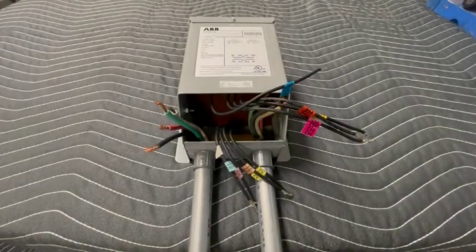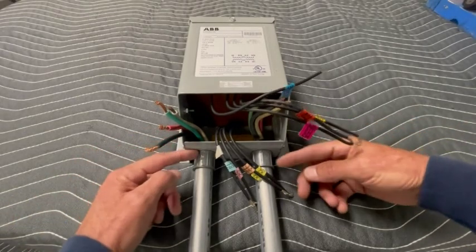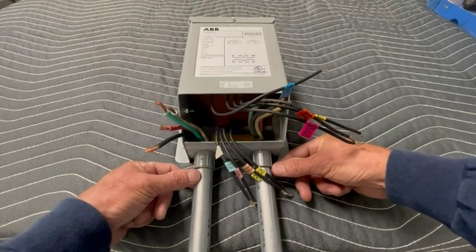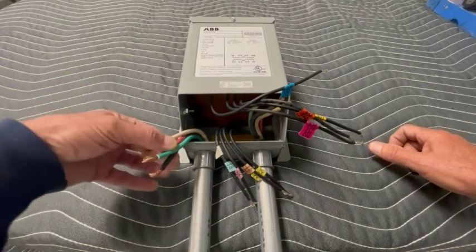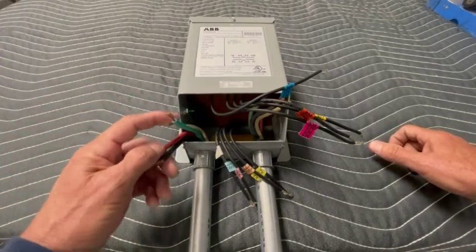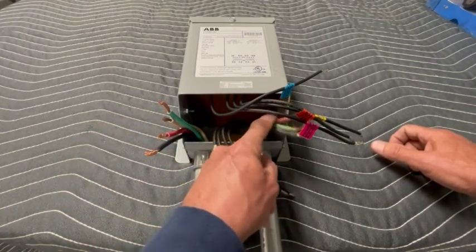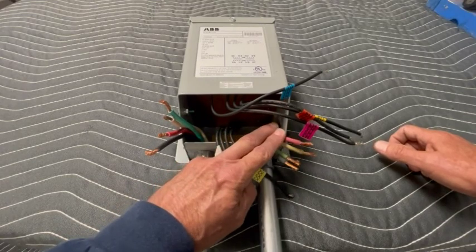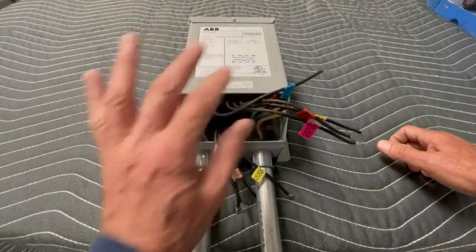The buck boost transformer comes with four knockouts. You got two on the sides here and you got two on the bottom for your conduit. So as you can see we already ran our conduits here. We have our incoming source power wires. We got L1, L2 neutral and ground. And then over here we have our wires that are going to the panel itself. Once again L1, L2 neutral and ground. And then once again our H and X wires.